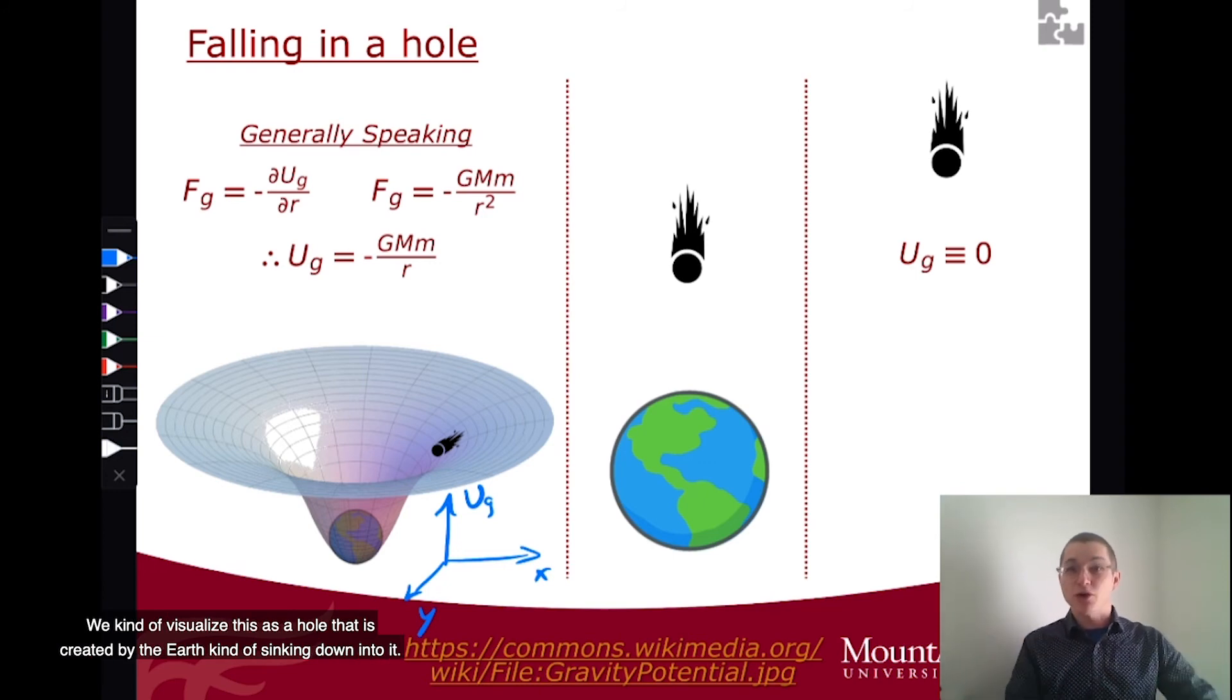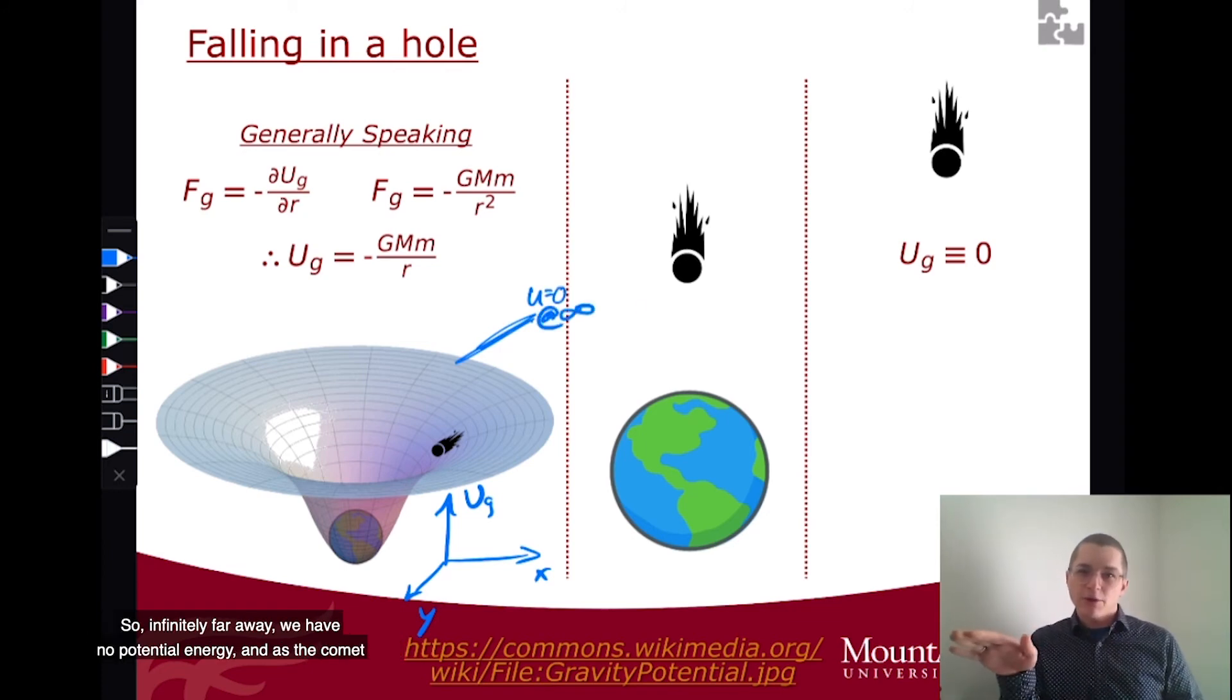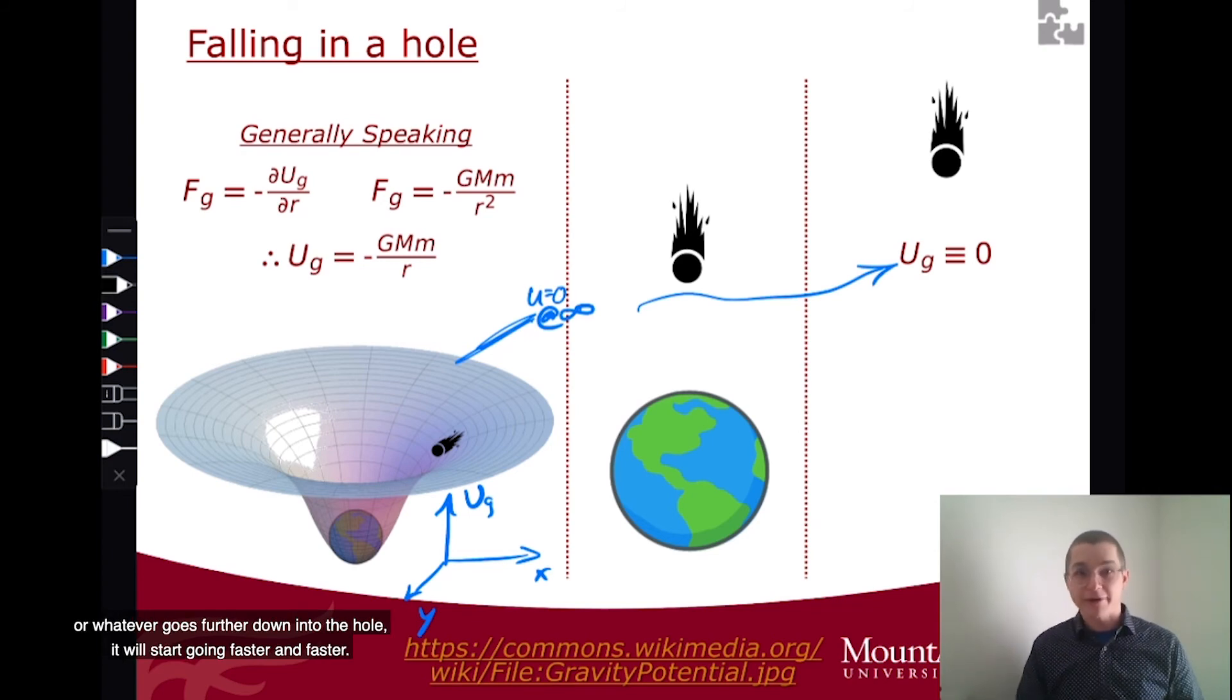We kind of visualize this as a hole in this, that is created by the Earth kind of sinking down into it. So infinitely far away, we have no potential energy. And as the comet or whatever goes further down into the hole, it'll start going faster and faster.